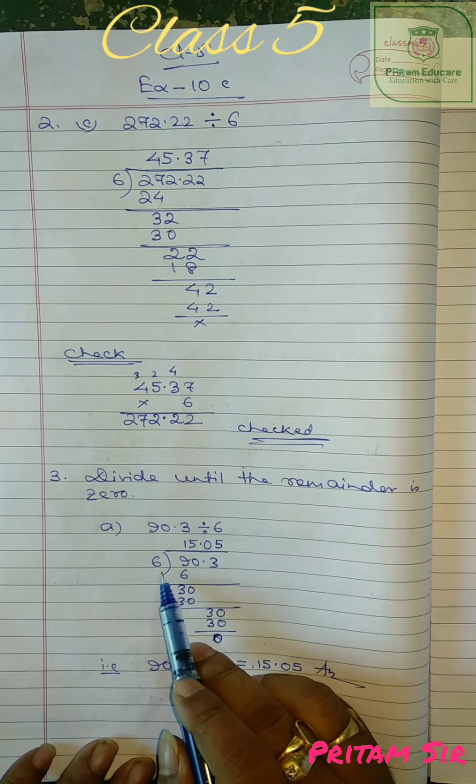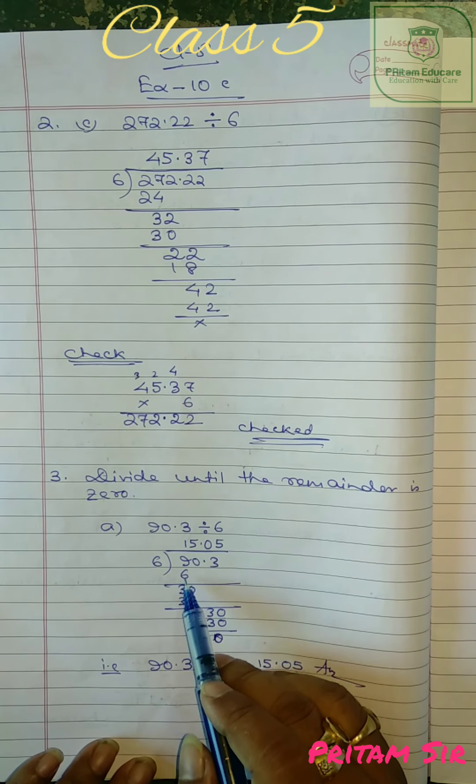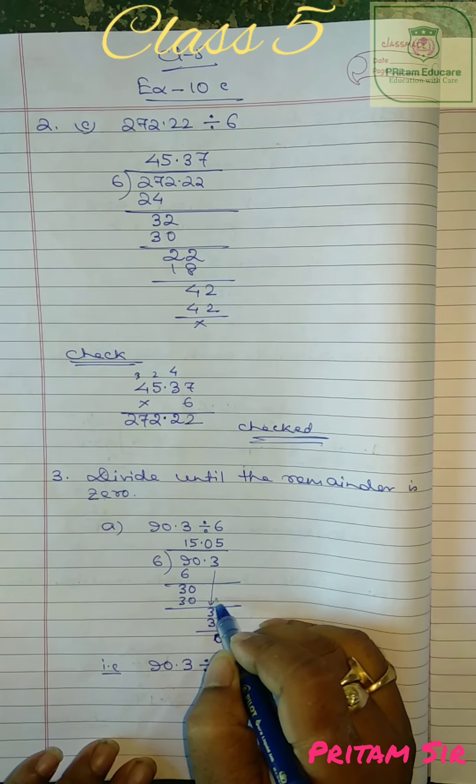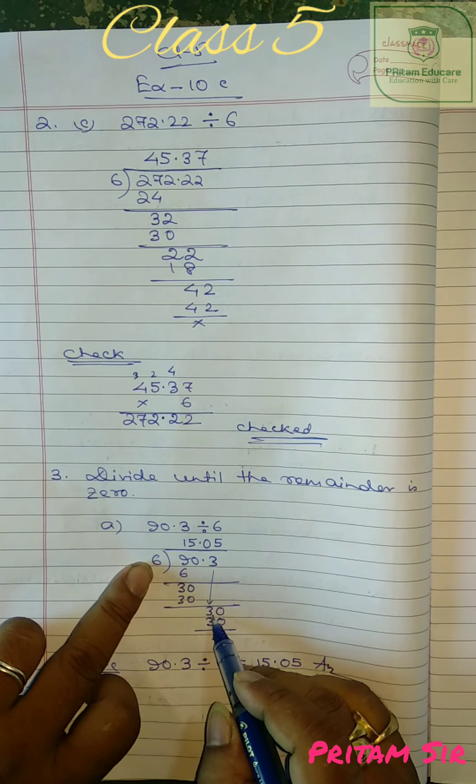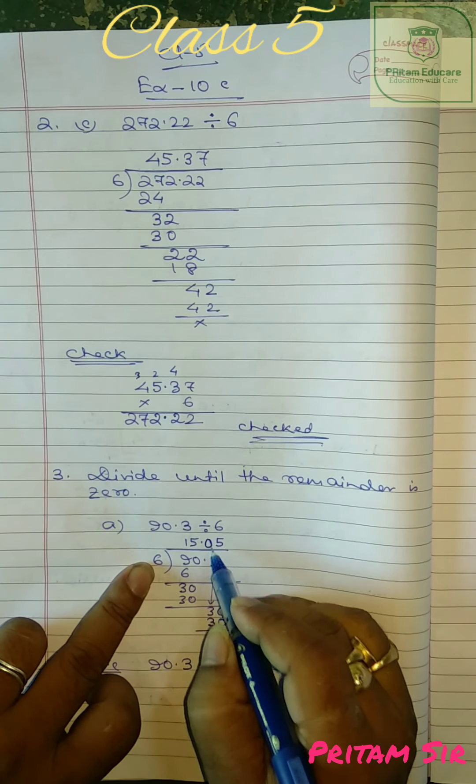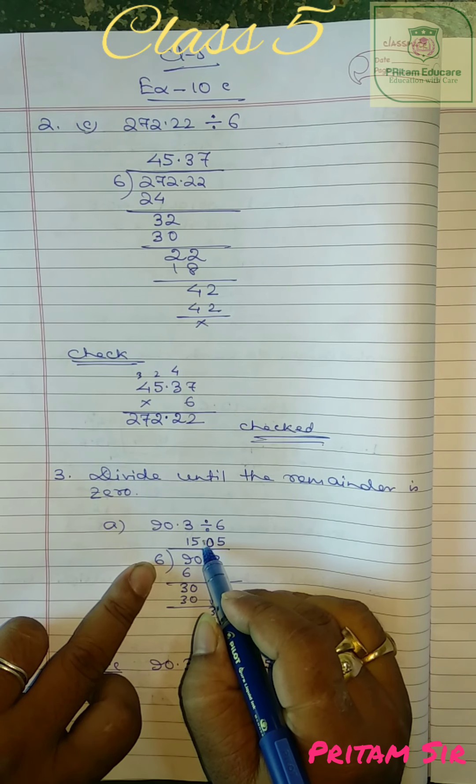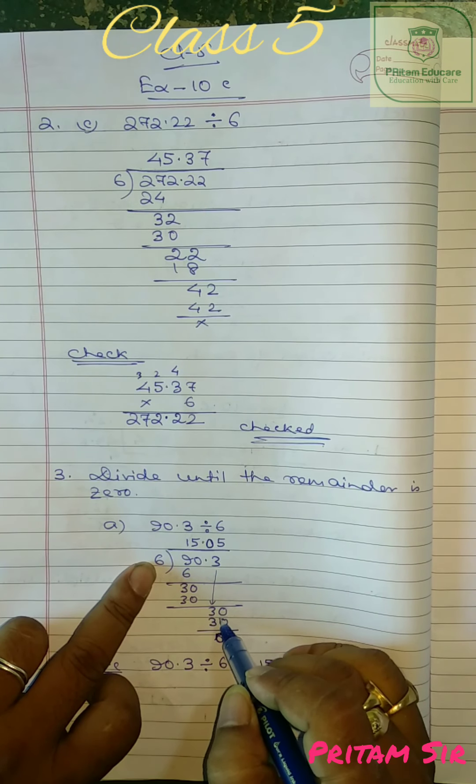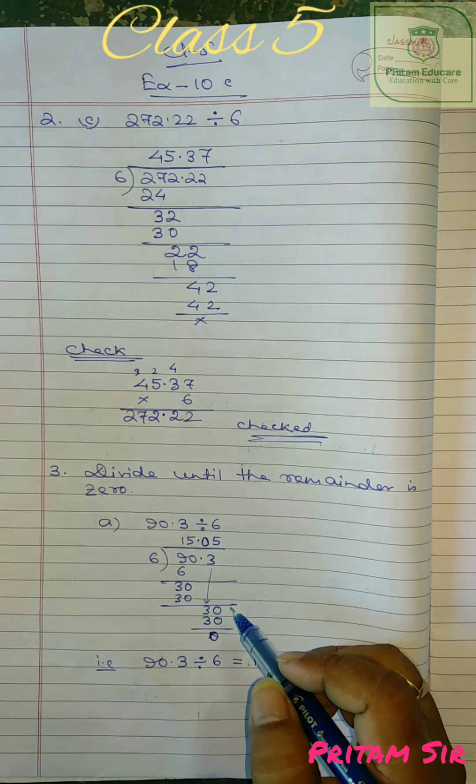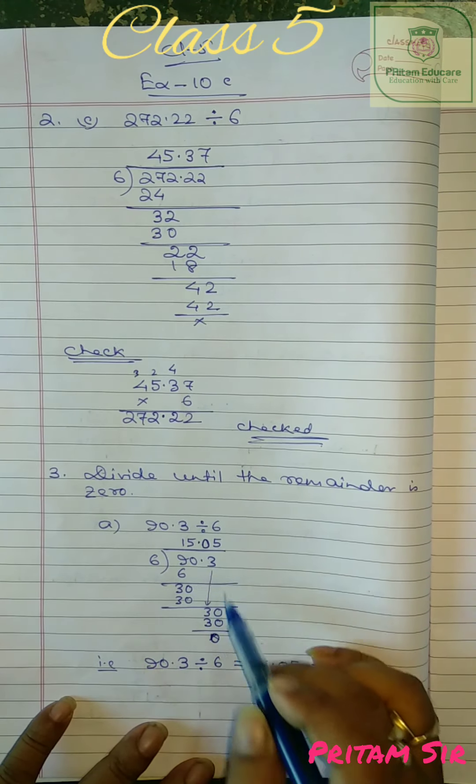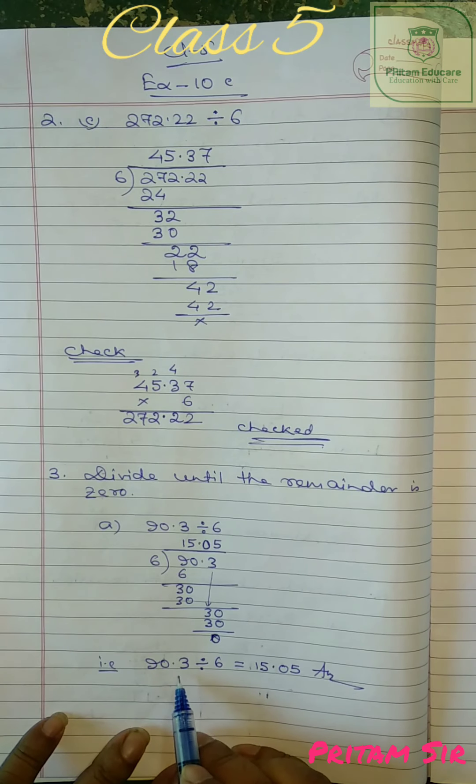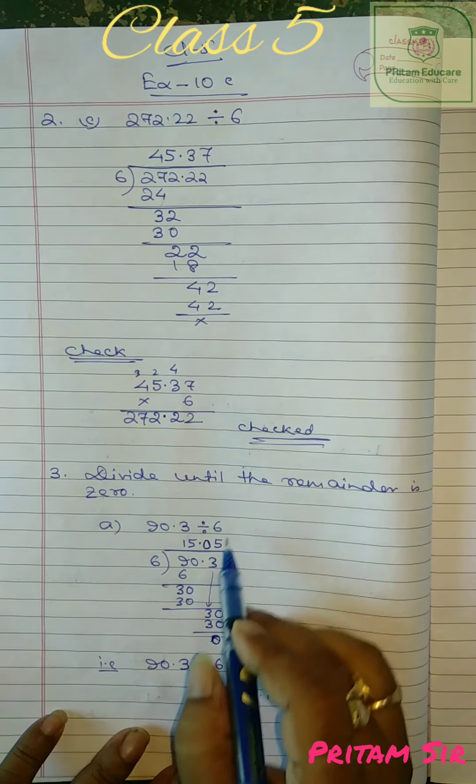Now question number 3, divide until the remainder is 0. So 90.3 divided by 6. 6 into 1, just 6 into 3 is 30, 5 into 6 is 30, finished. Now point will shift here and 3 comes down. Now 3 is smaller than 6, the decimal has already shifted. 3 smaller than 6 so we take 0, then for decimal we will get an extra 0. Now 35, 6 into 5 is 30. So remainder is 0. So 90.3 divided by 6 is 15.05.